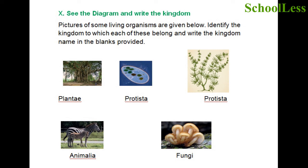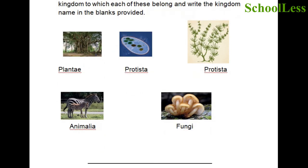Last question: See the diagram and write the kingdom. Pictures of five living organisms are given; identify the kingdom each belongs to. A tree belongs to the Plantae kingdom. The next two are Protista. A zebra belongs to Animalia. A mushroom belongs to the Fungi kingdom.